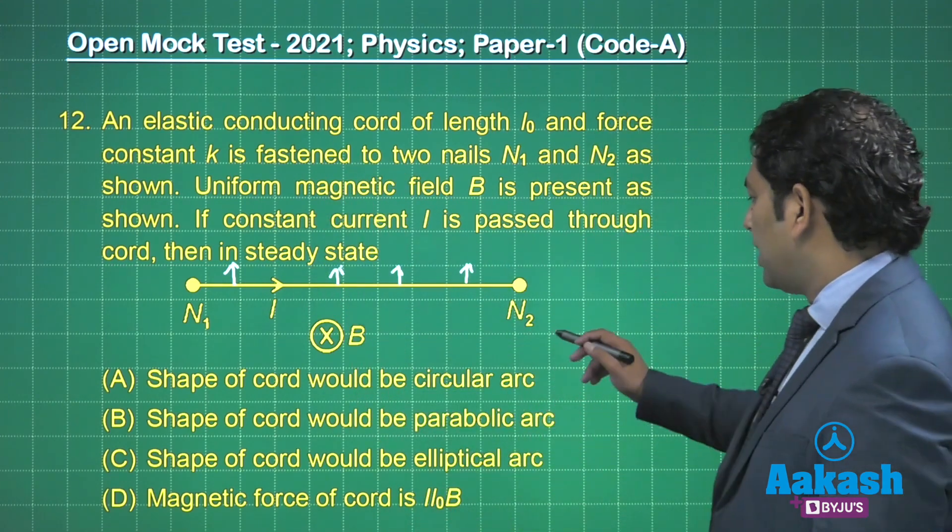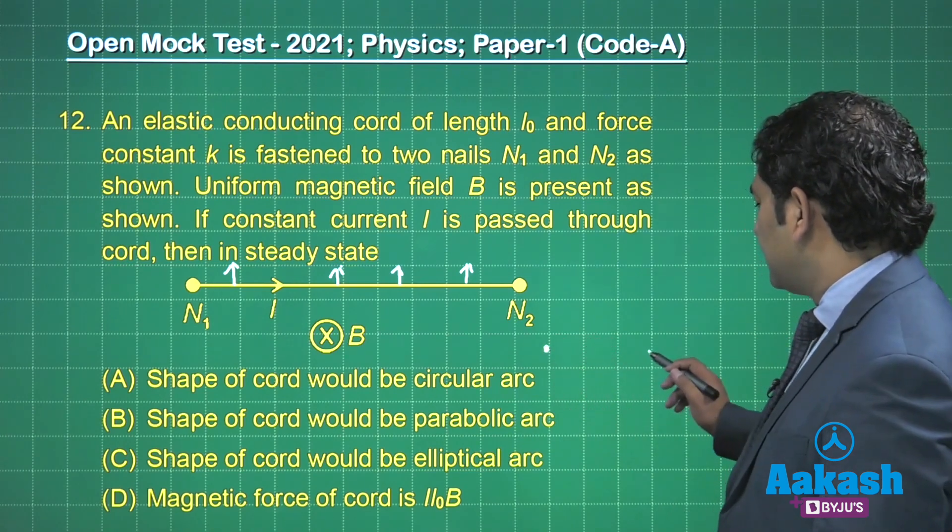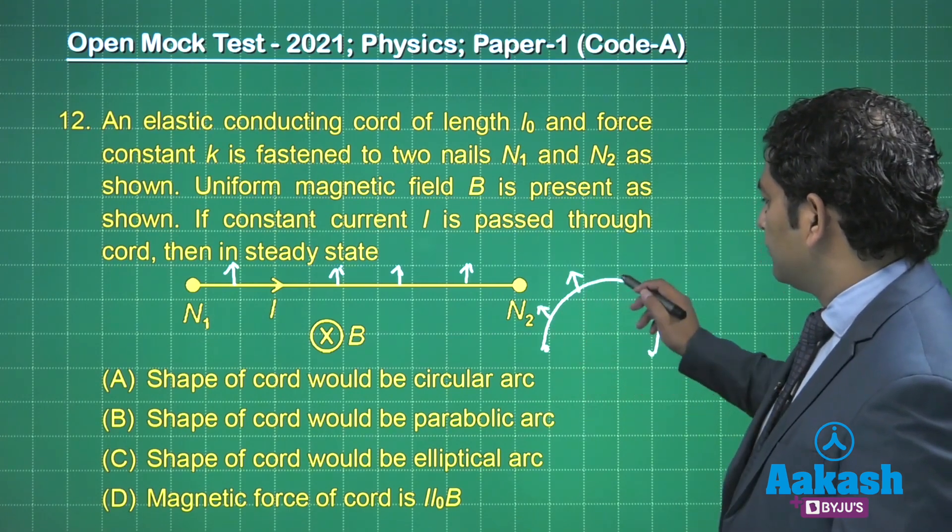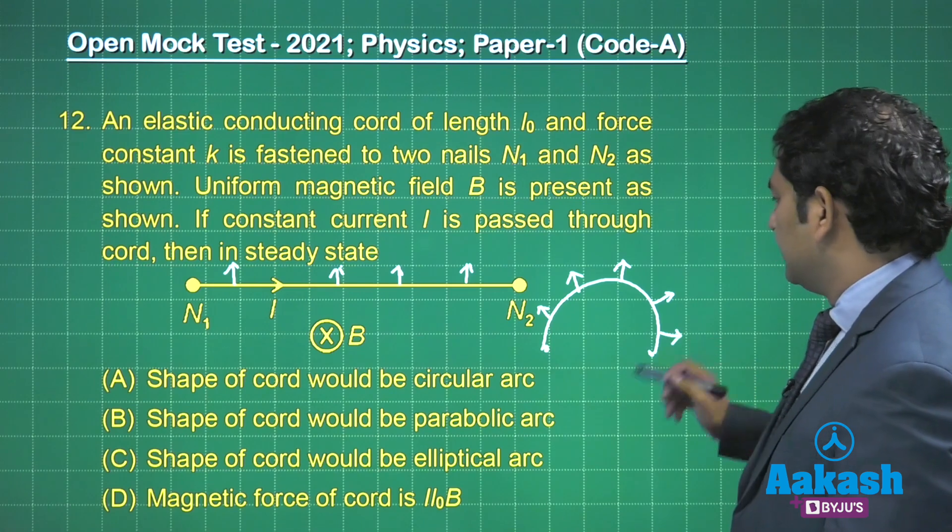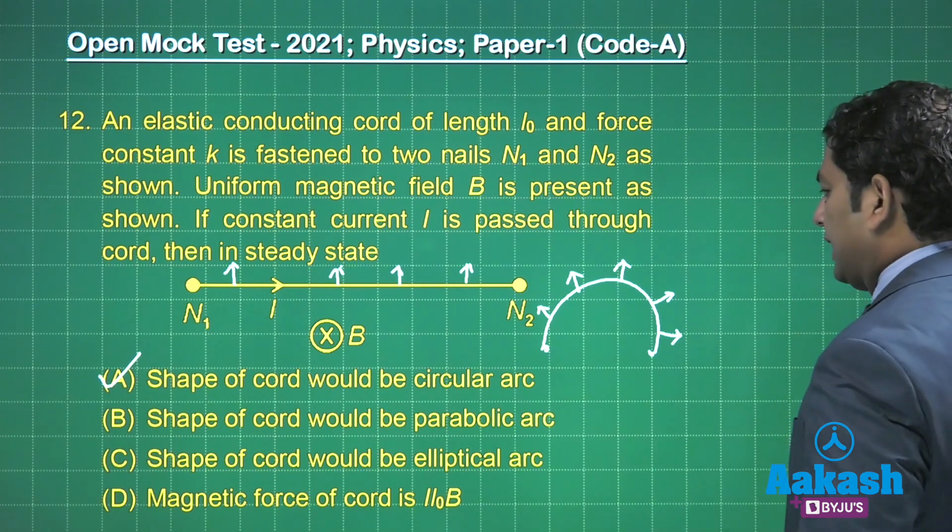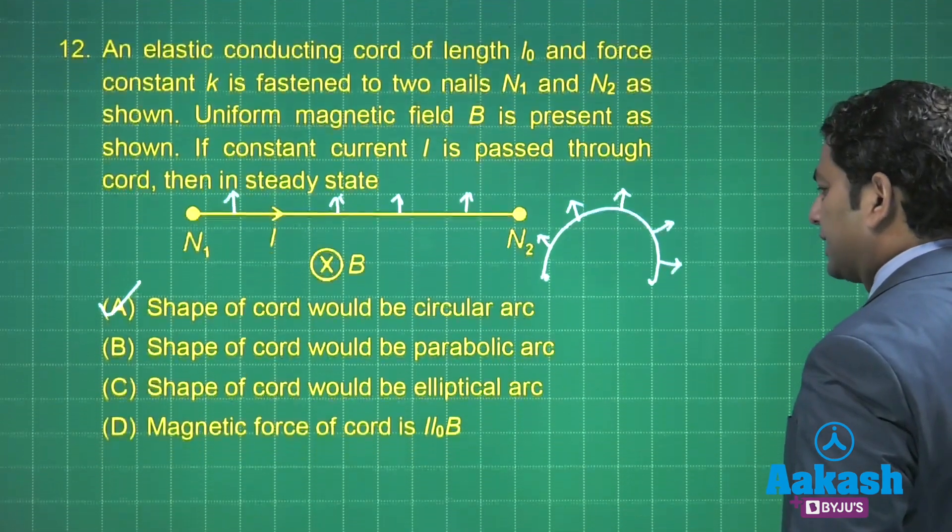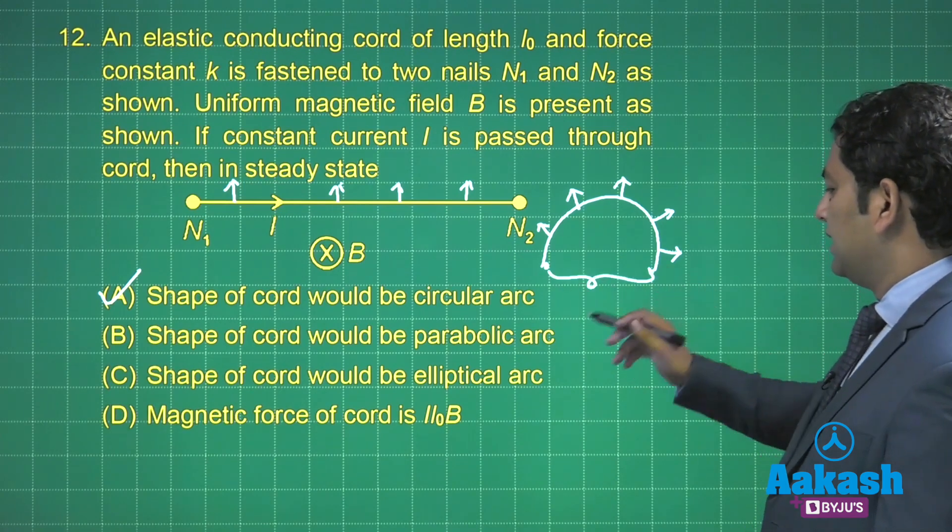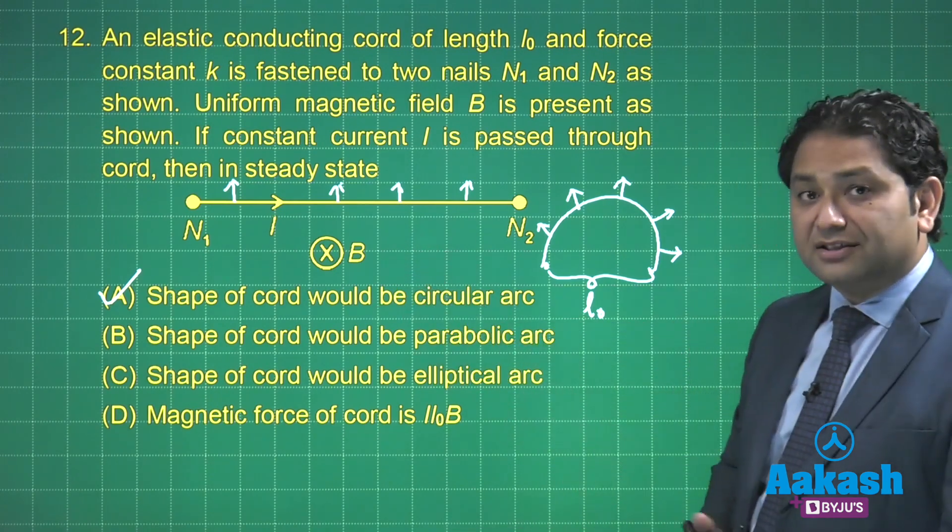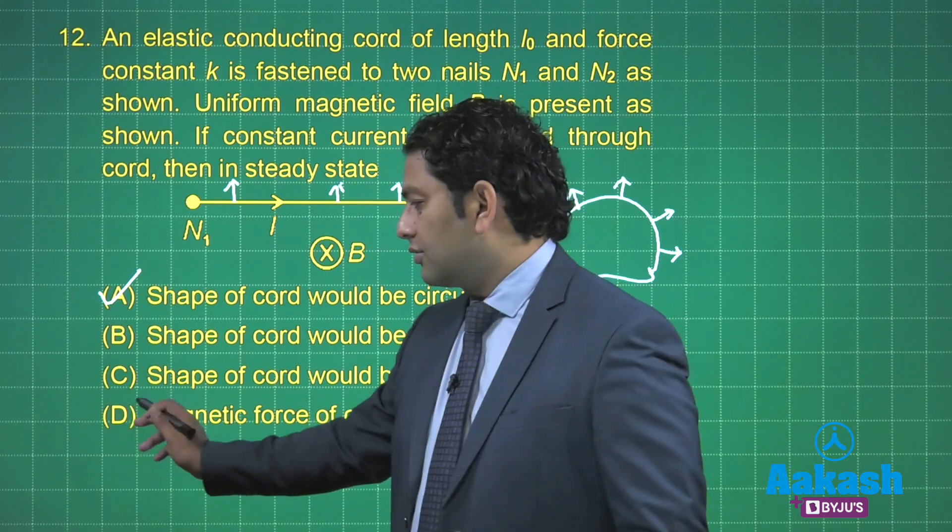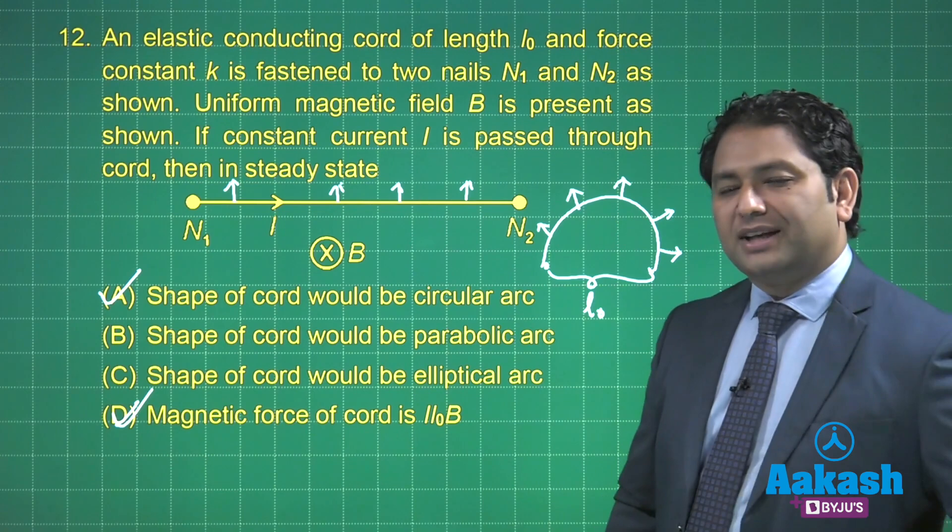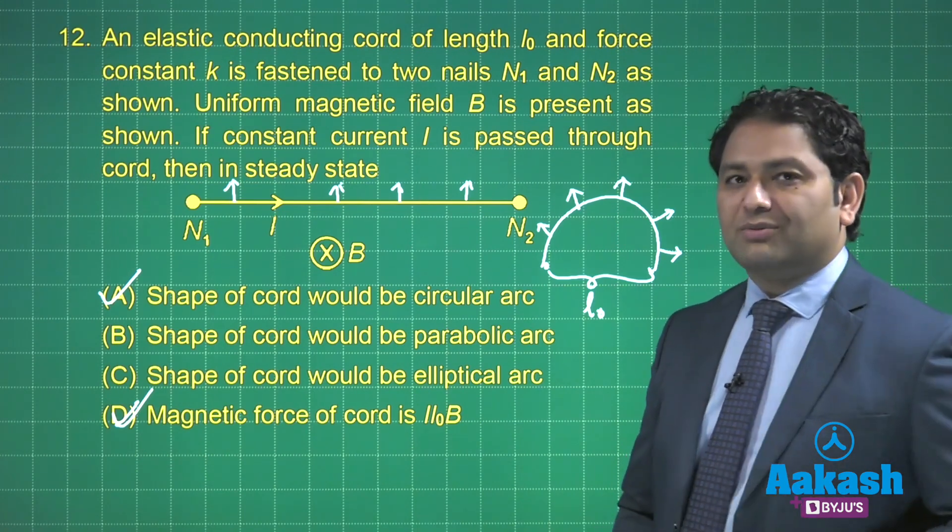How come? Because N₁ is there, N₂ is there, so when it goes, and you also know that eventually the force will be acting perpendicular in this manner. So clearly shape of the chord will be a circular one, and so B, C would be incorrect. Magnetic force, but still the length end to end length is l₀, and the magnetic field is uniform, so what really matters is only the end to end length. So I L cross B, option number D would also be correct. Now guys, we'll go to the next portion where numeric value based questions would be there.